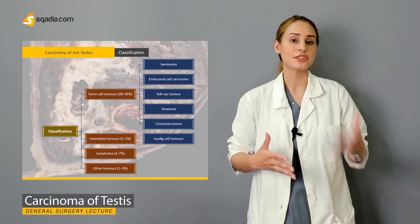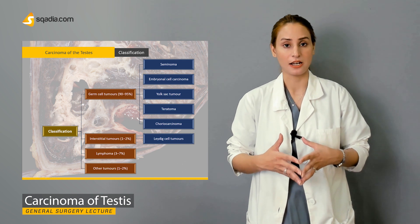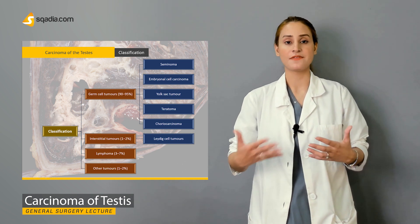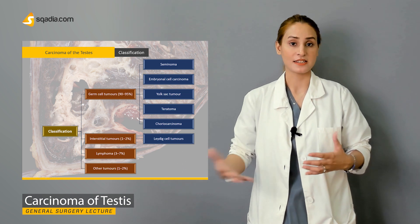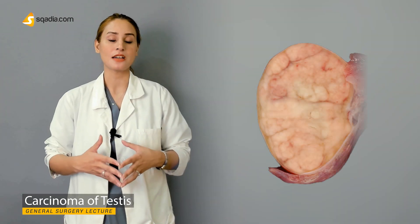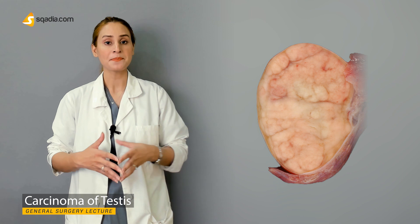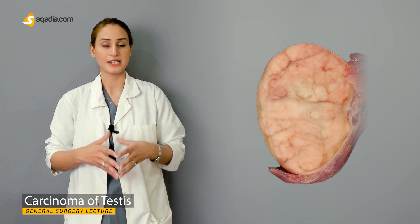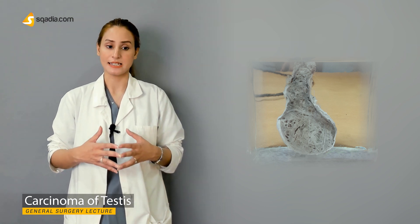Testicular tumors are divided into seminomas and non-seminomas. We will be talking about seminomas, which account for almost 90 to 95% of testicular tumors, and then also about non-seminomas, which comprise about 5 to 7% of all testicular tumors.